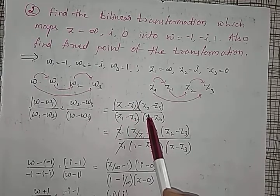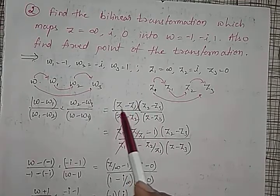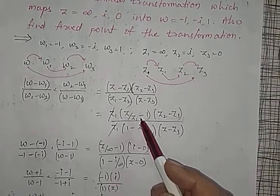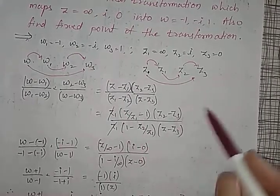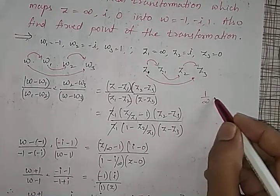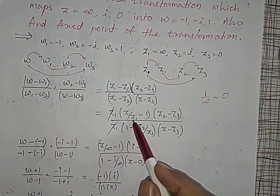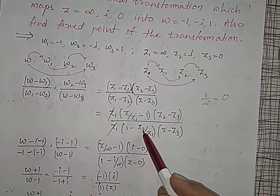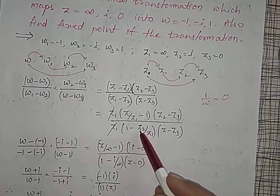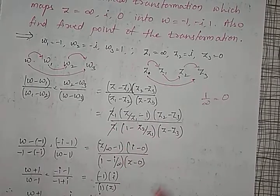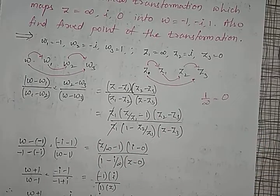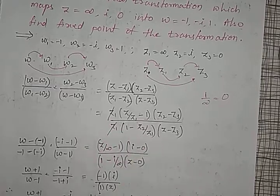Since z1 is infinity, substituting directly would give an indeterminate form. To handle this, take z1 common from both numerator and denominator so that z1 cancels. We use the fact that 1/infinity equals 0, so any term divided by infinity becomes zero. Whichever term is infinity, we take it common and then solve.